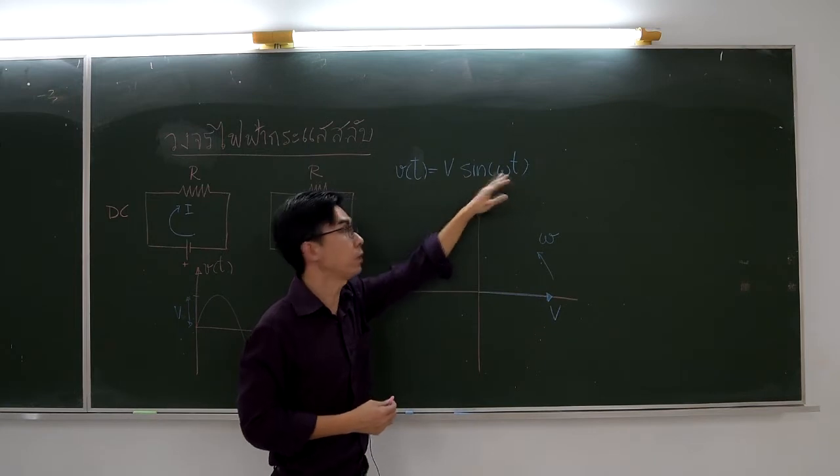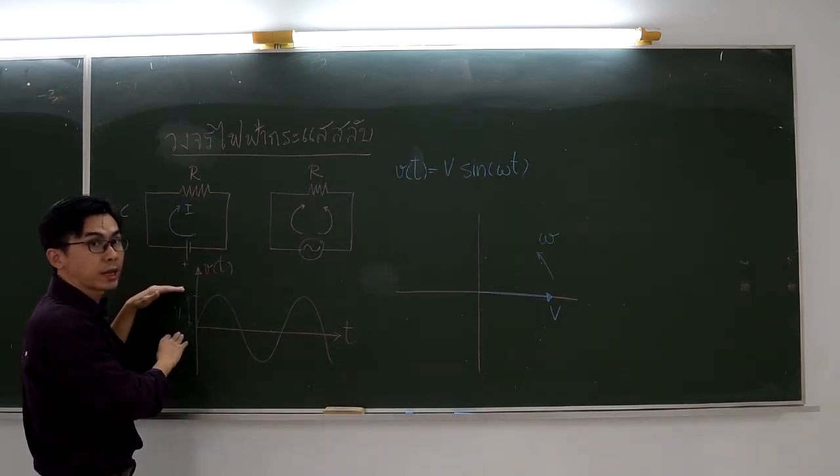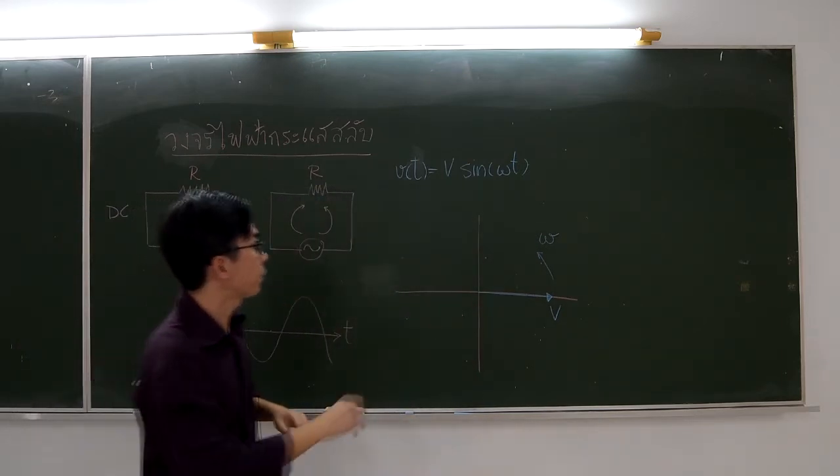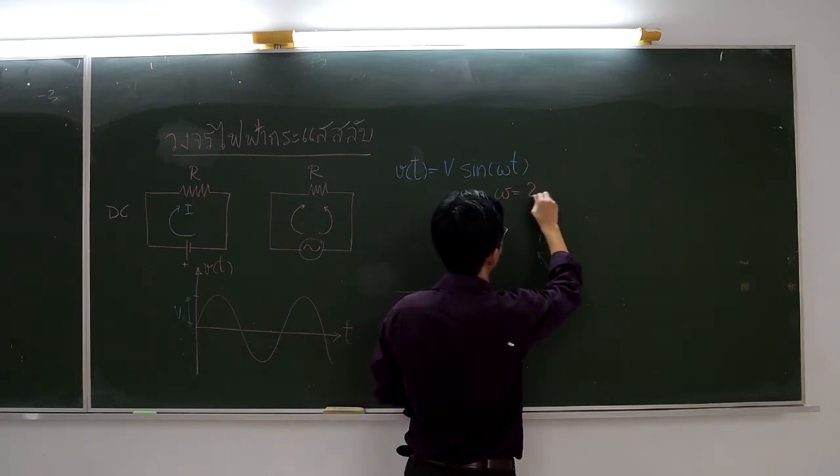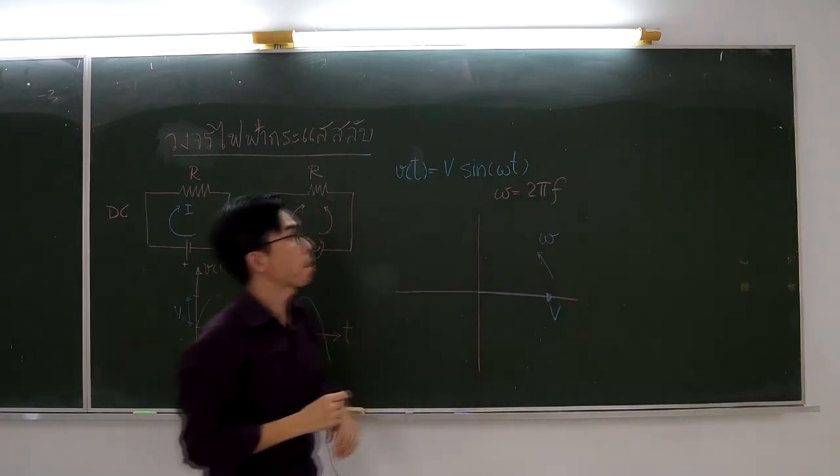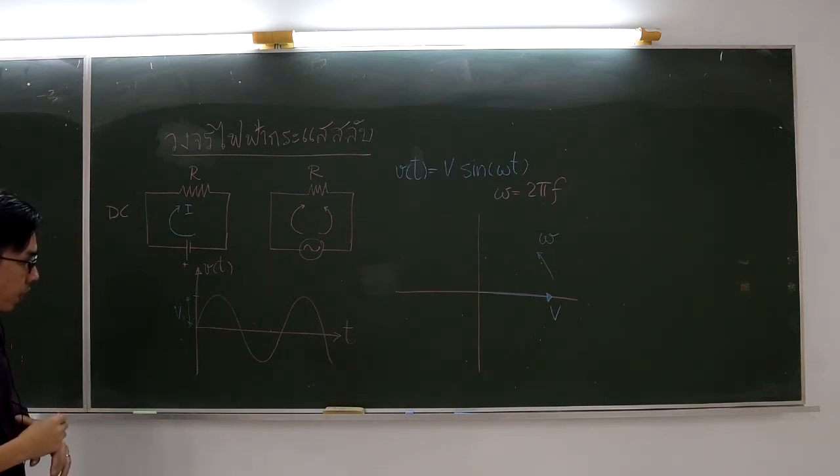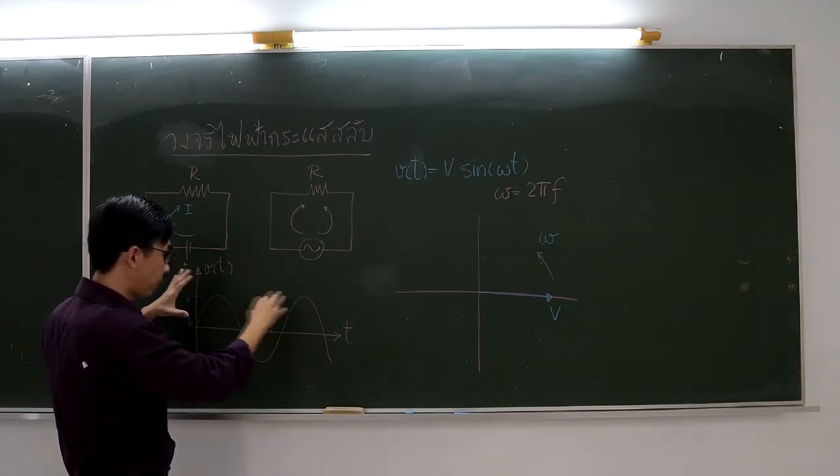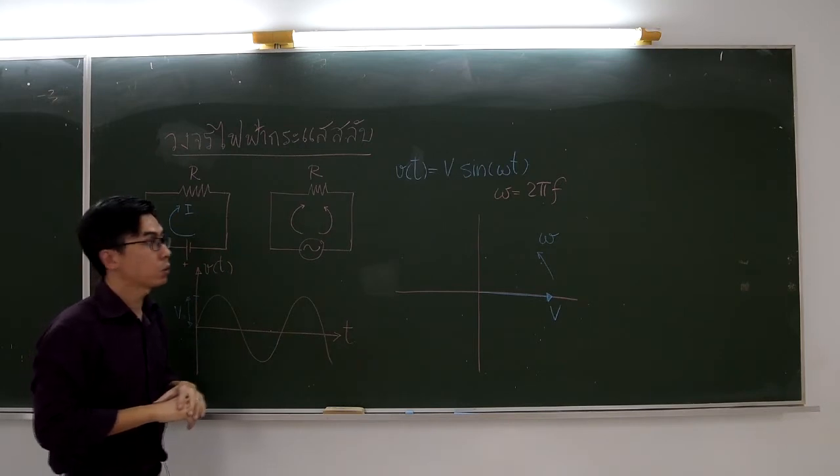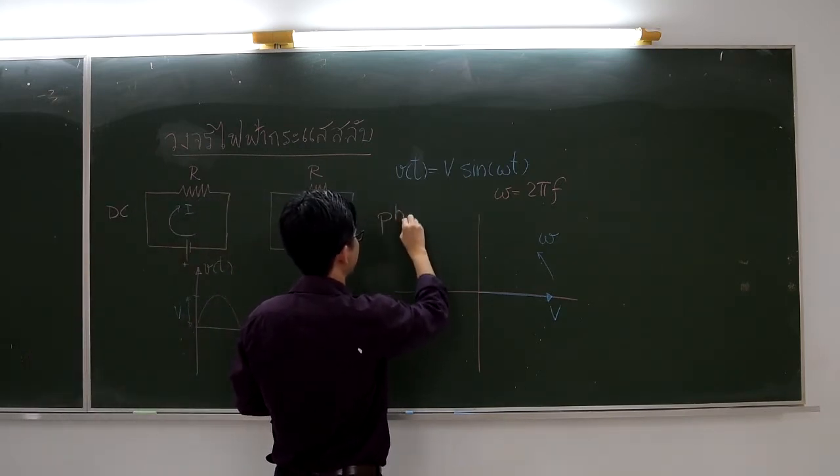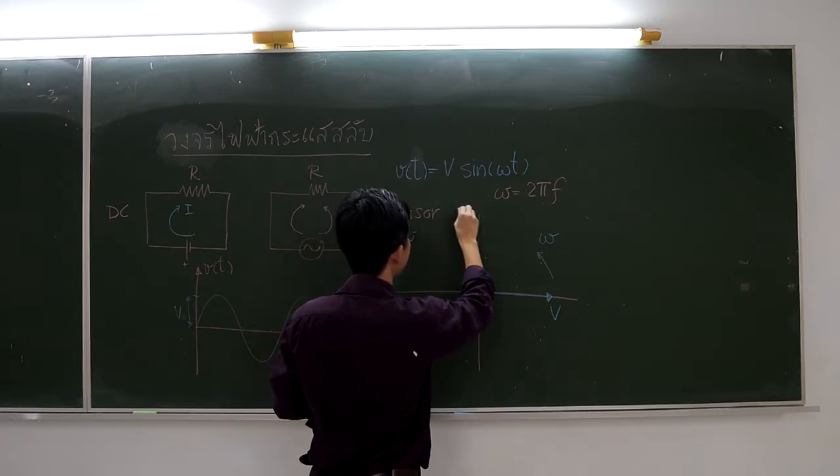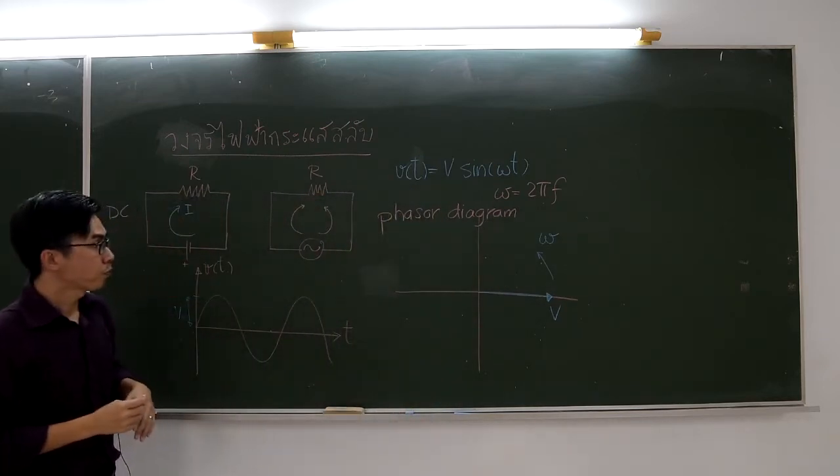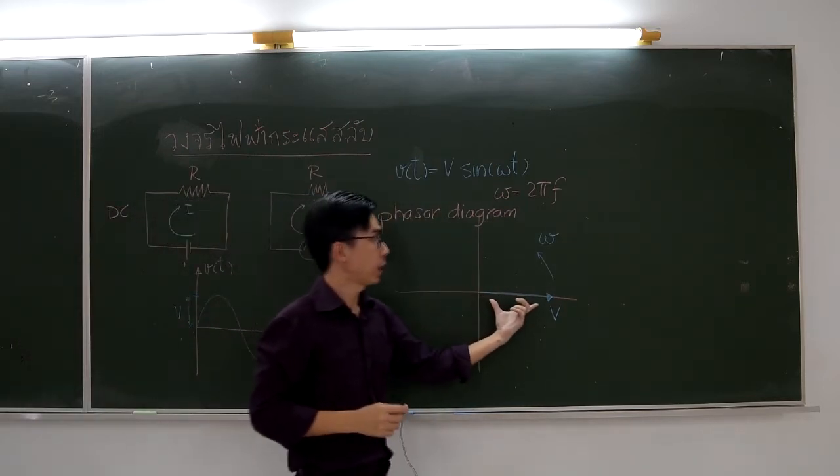The uppercase V is the amplitude of the voltage from the source. We find that it is much easier to analyze the circuit if we think of this kind of function as a vector. This is a vector that rotates about the center with angular velocity omega, where omega is 2πf, and f is the frequency of the voltage.